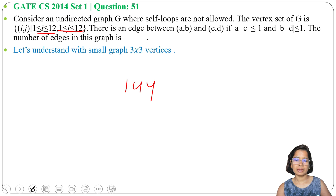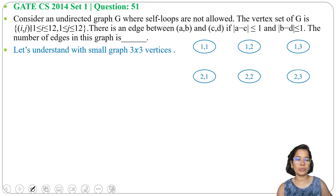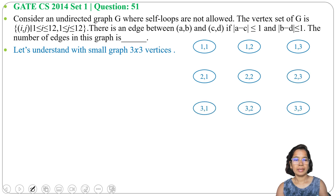The 9 vertices are: (1,1), (1,2), (1,3), (2,1), (2,2), (2,3), (3,1), (3,2), (3,3). Next we will add the edges, using the condition that |A minus C| ≤ 1 and |B minus D| ≤ 1.